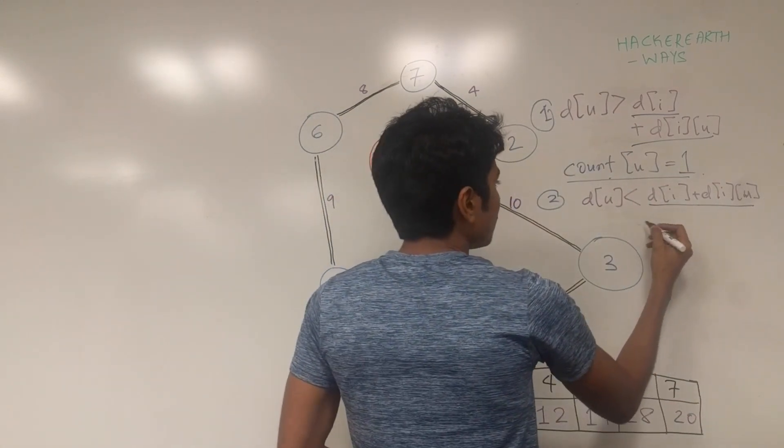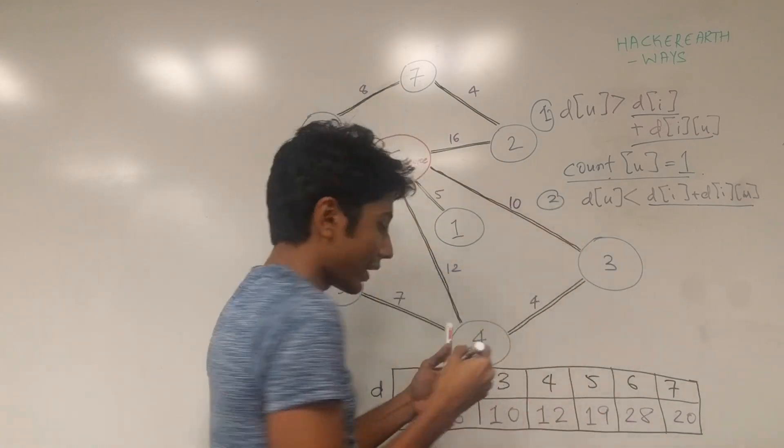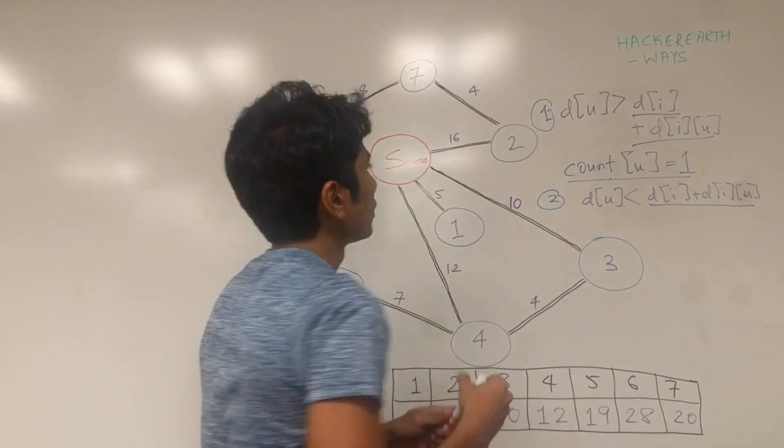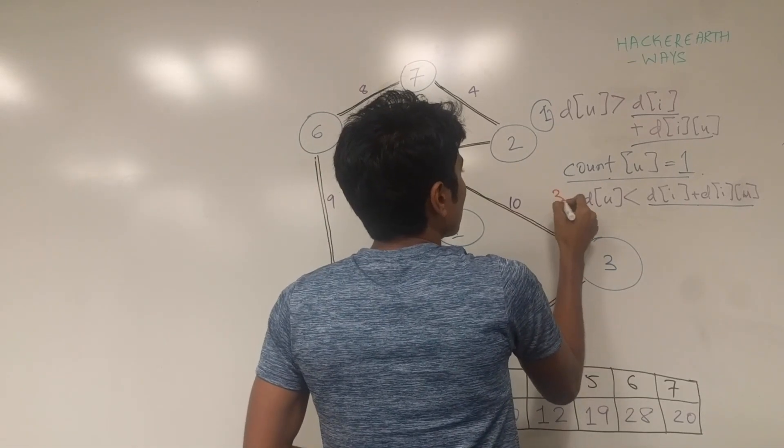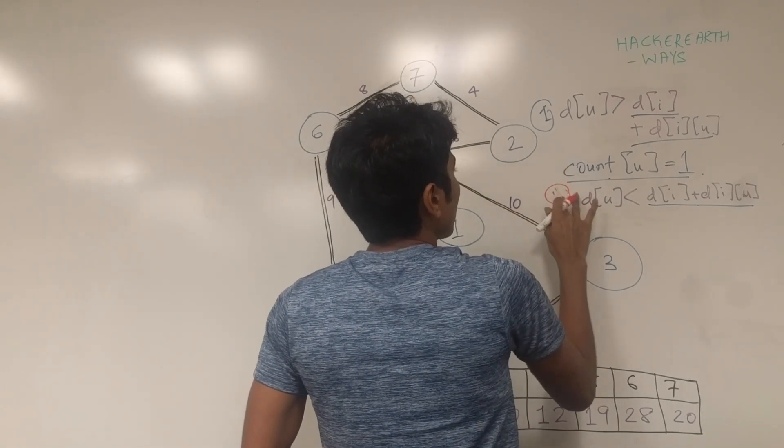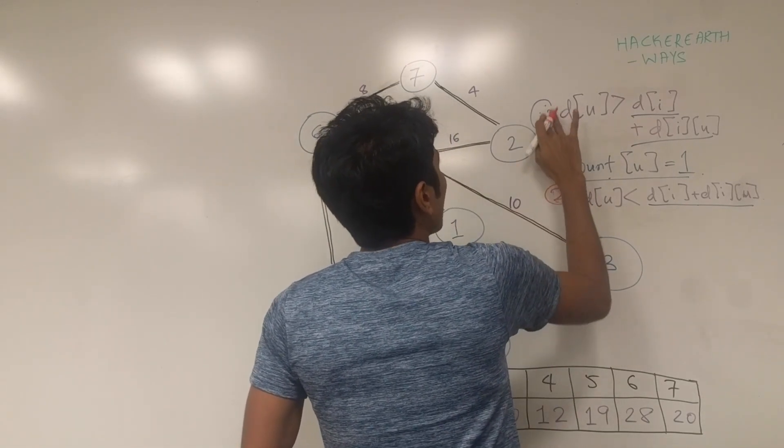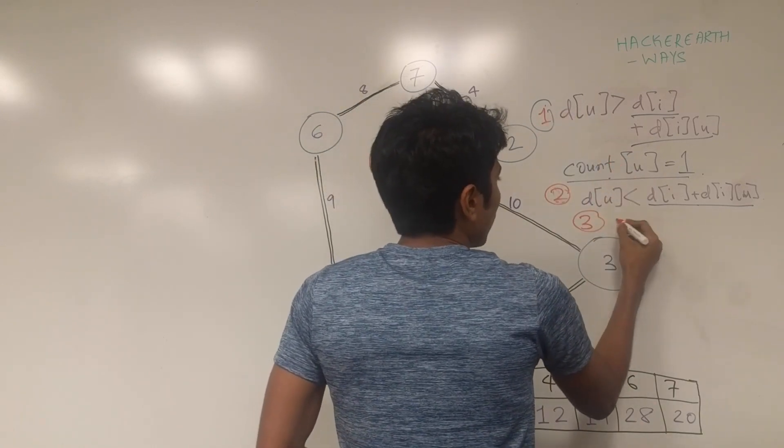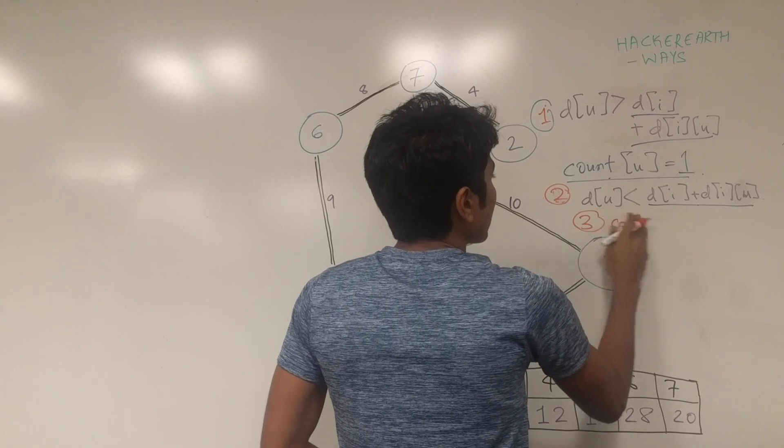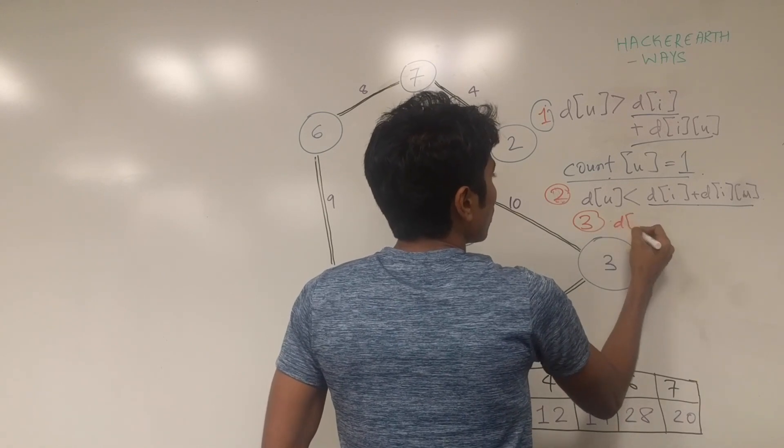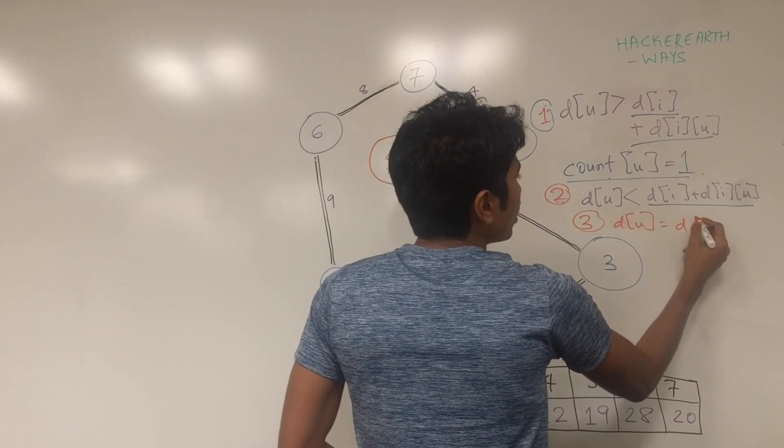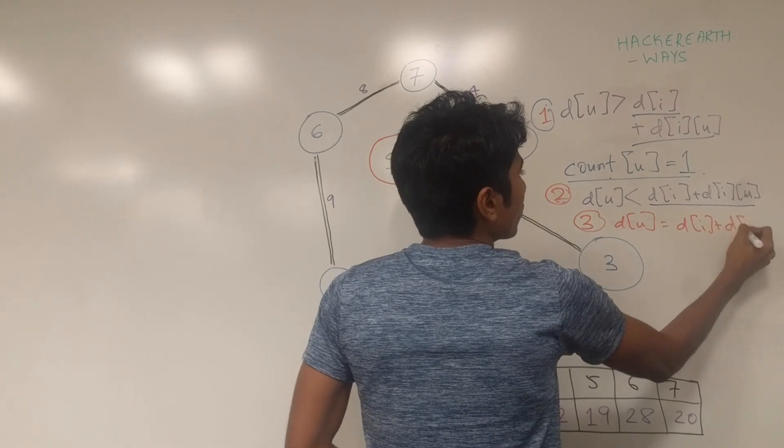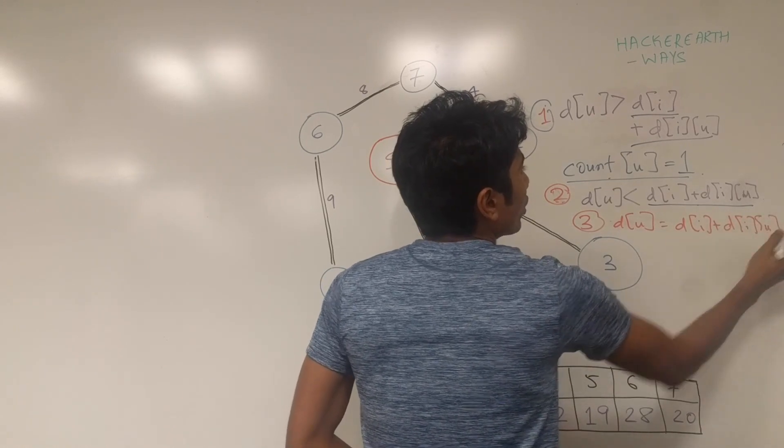And finally, the third condition, which is the most interesting one of course, is that if D of U is equal to D of I plus D of I U. You're using an intermediate and it gives you the exact same distance that you had earlier.